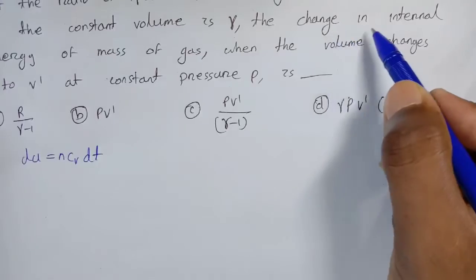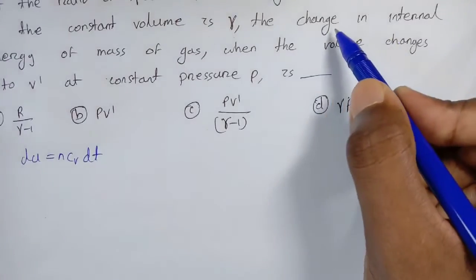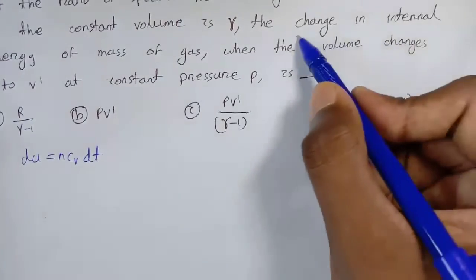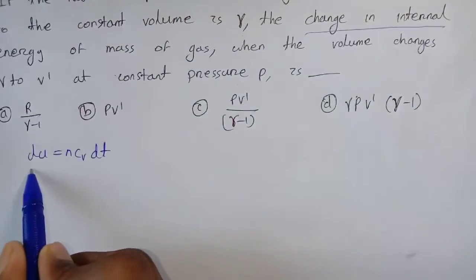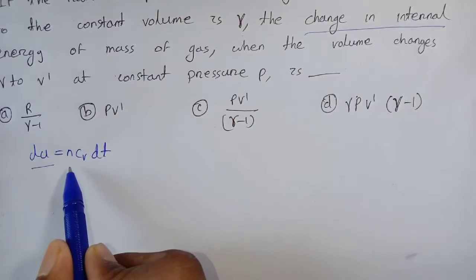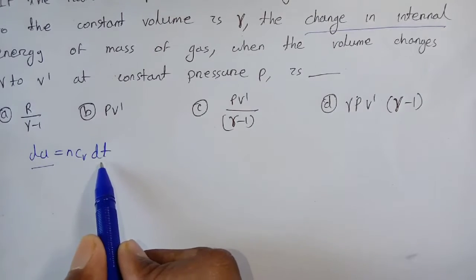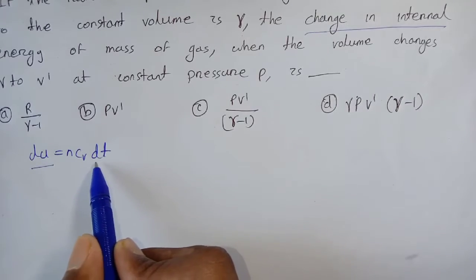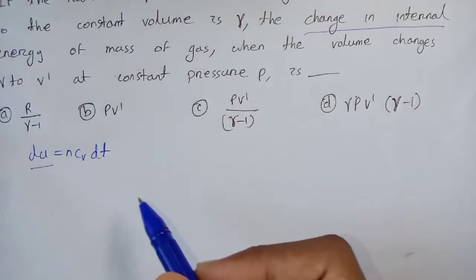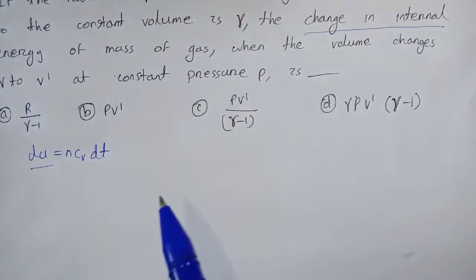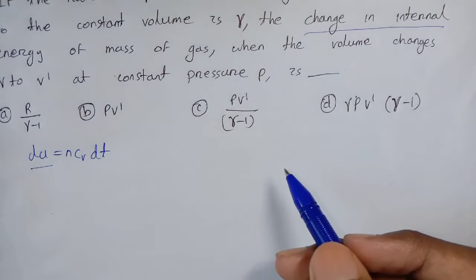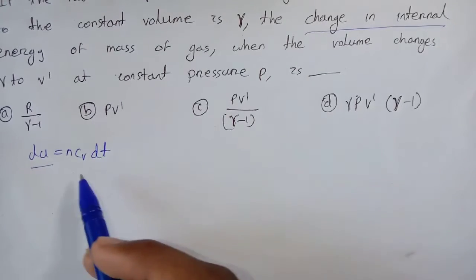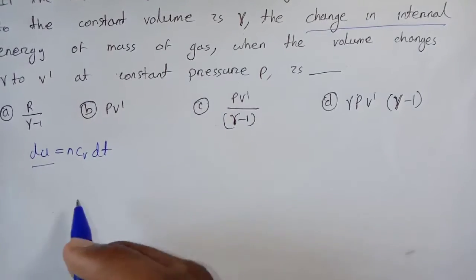इस question में हमको change in internal energy find करना है, तो DU find करना है। DU का formula क्या होता है? NCV·DT — यह formula तब use होता है जब हमको internal energy को gamma की terms में convert करना होता है।